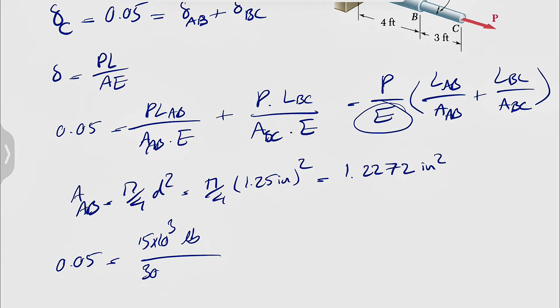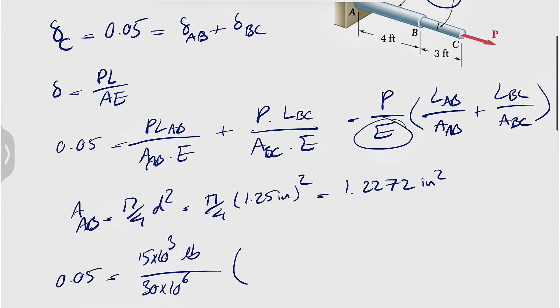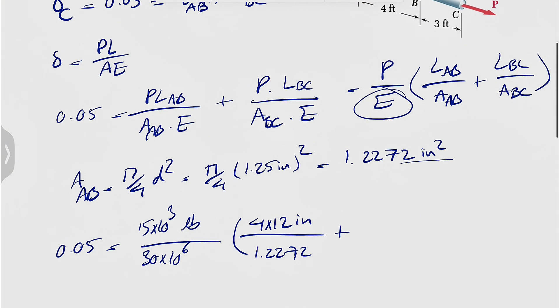Elastic modulus is already pound per inch squared, and the length of AB from the question we know is 4 feet, so we're going to multiply that by 12 to get it in inches. Over the area that we found based on inches squared, 1.2272 plus length of BC is 3 feet, so again 3 times 12 to get it in inches.